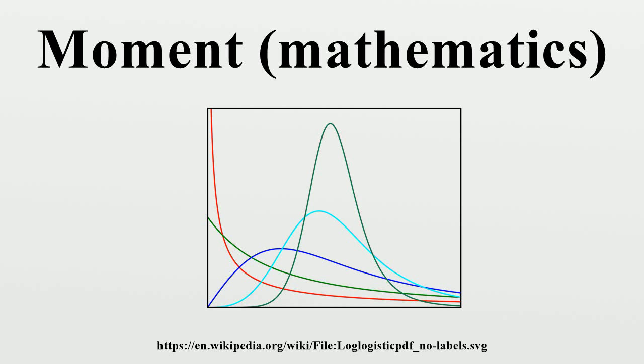If the points represent probability density, then the zeroth moment is the total probability. The first moment is the mean, the second central moment is the variance, the third moment is the skewness, and the fourth moment is the kurtosis.